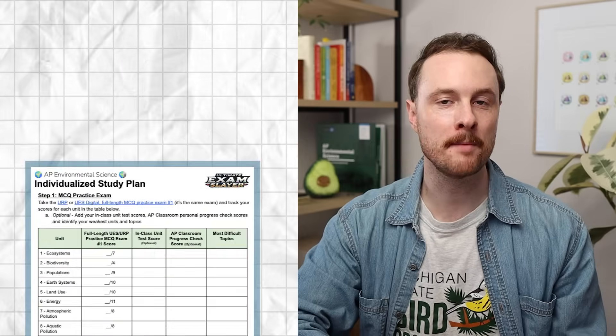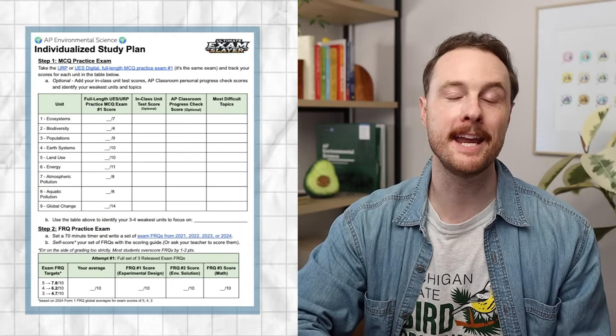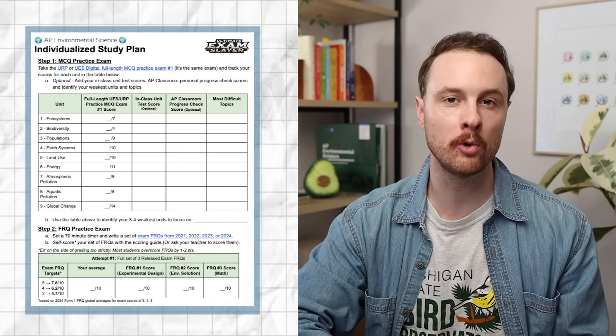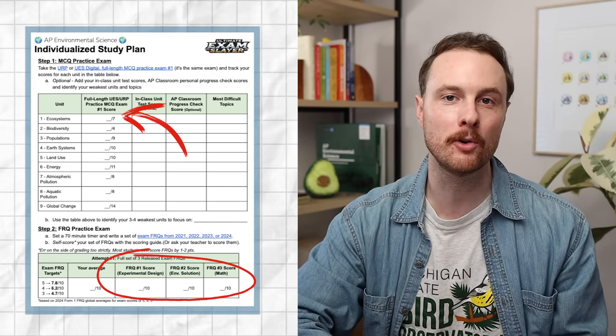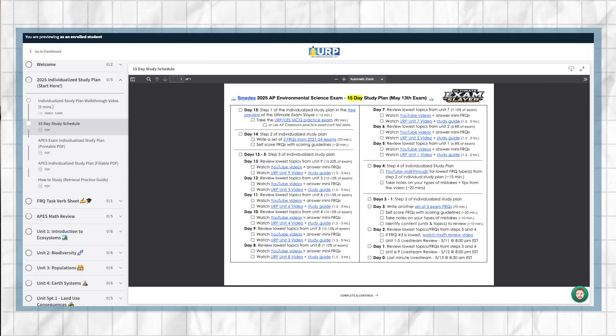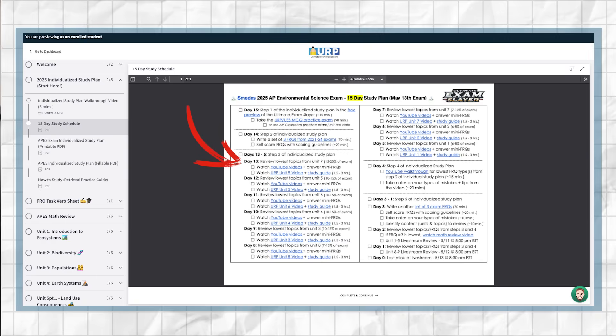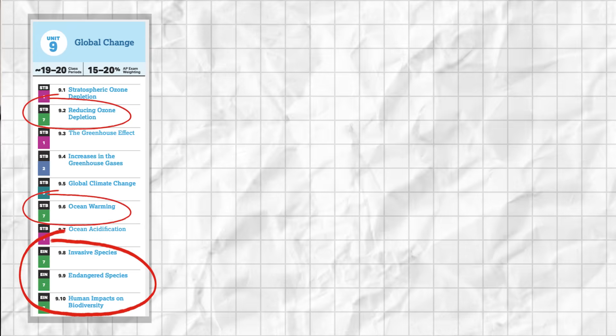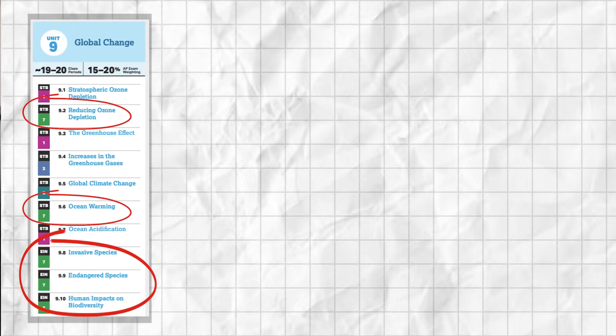Now let's talk about what to study. If you have time, take a practice MCQ test and write a set of three released exam FRQs, then fill out the individualized study plan to focus on your weakest units and FRQ types. If you're down to a week or less, direct your studying at the most heavily covered units. Start with unit 9 since it's 15-20% of the exam, and it contains a lot of environmental solutions, which make up a big portion of both the MCQ and FRQ sections.